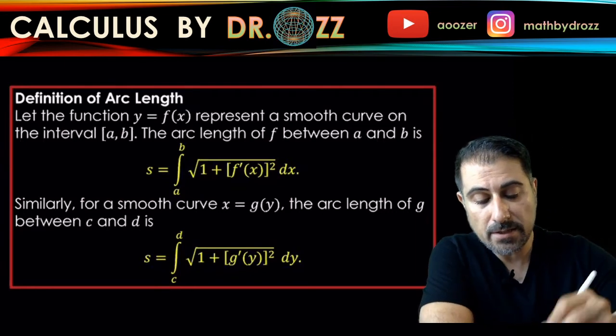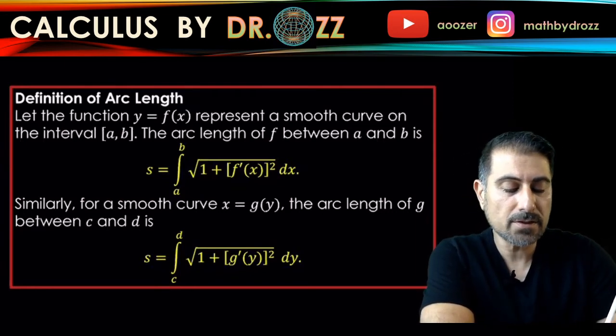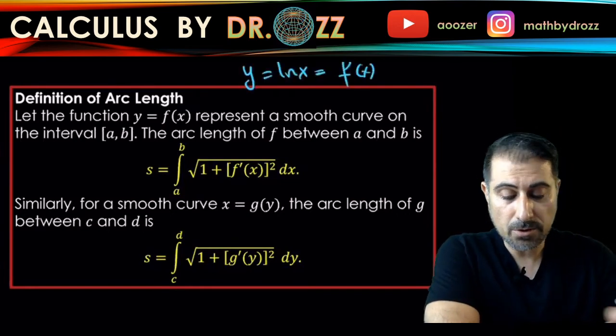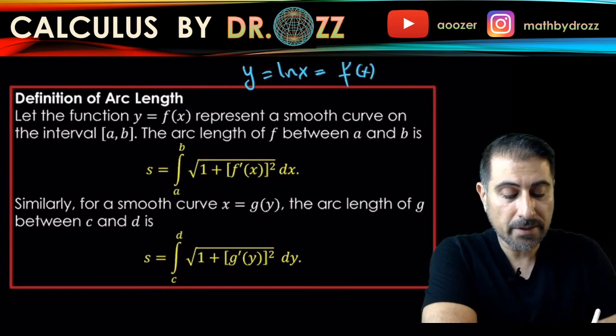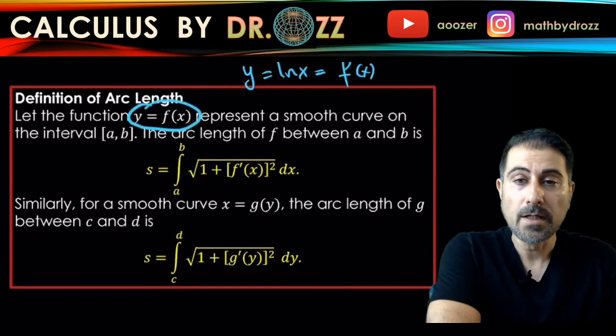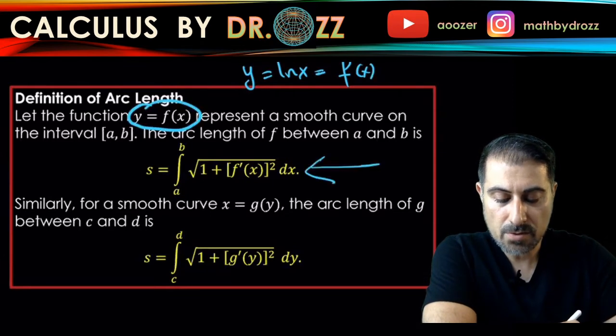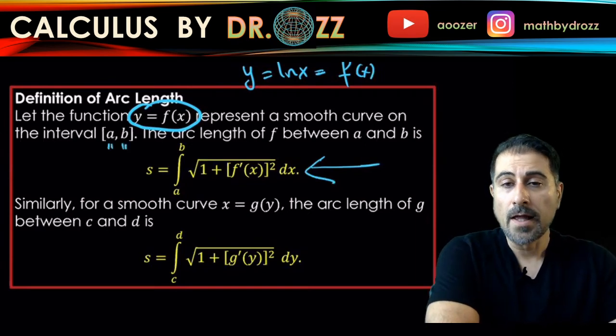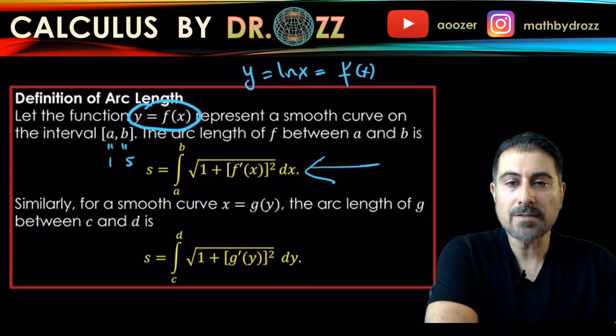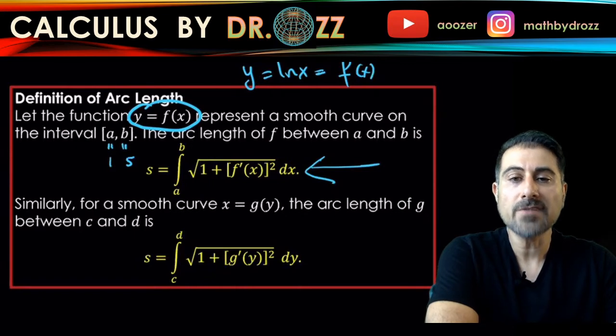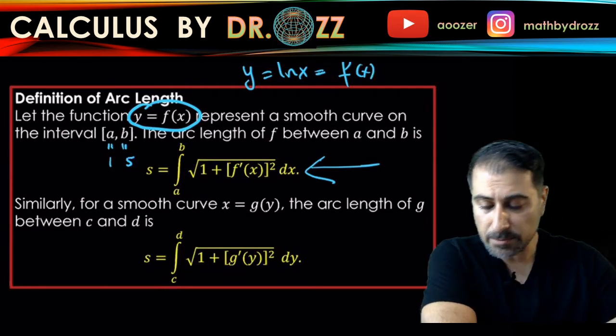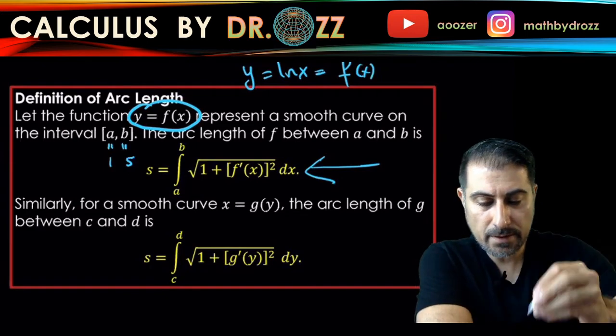So in our case, the function is defined as ln x. So this is in fact y equals f of x type representation of the curve. So we are in fact, we're staring at this formula. And here, we have a and b. So in our case, a equals 1 and b equals 5. So this is the integral provided to us. And all we're going to do is to evaluate the definite integral from 1 to 5, radical 1 plus f prime squared dx. So all we need is to look at f prime of x.